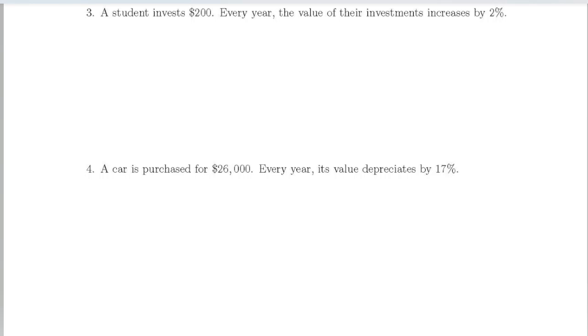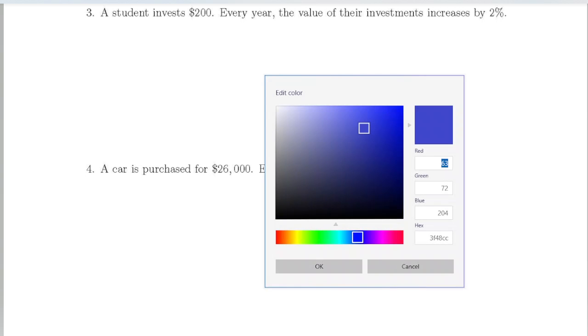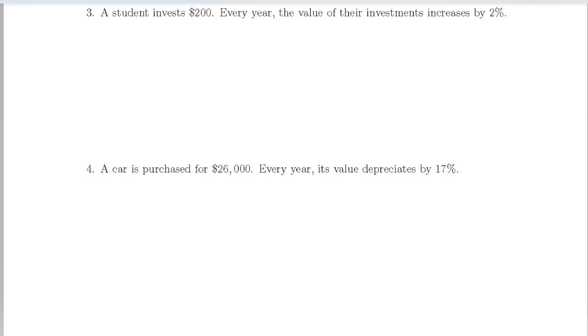We're going to start with our same basic form. In the last video we were using the form f(x) equals a times b to the x. If you haven't seen what these different things are, I suggest that you go back and watch that video, but we are going to use the same basic form.